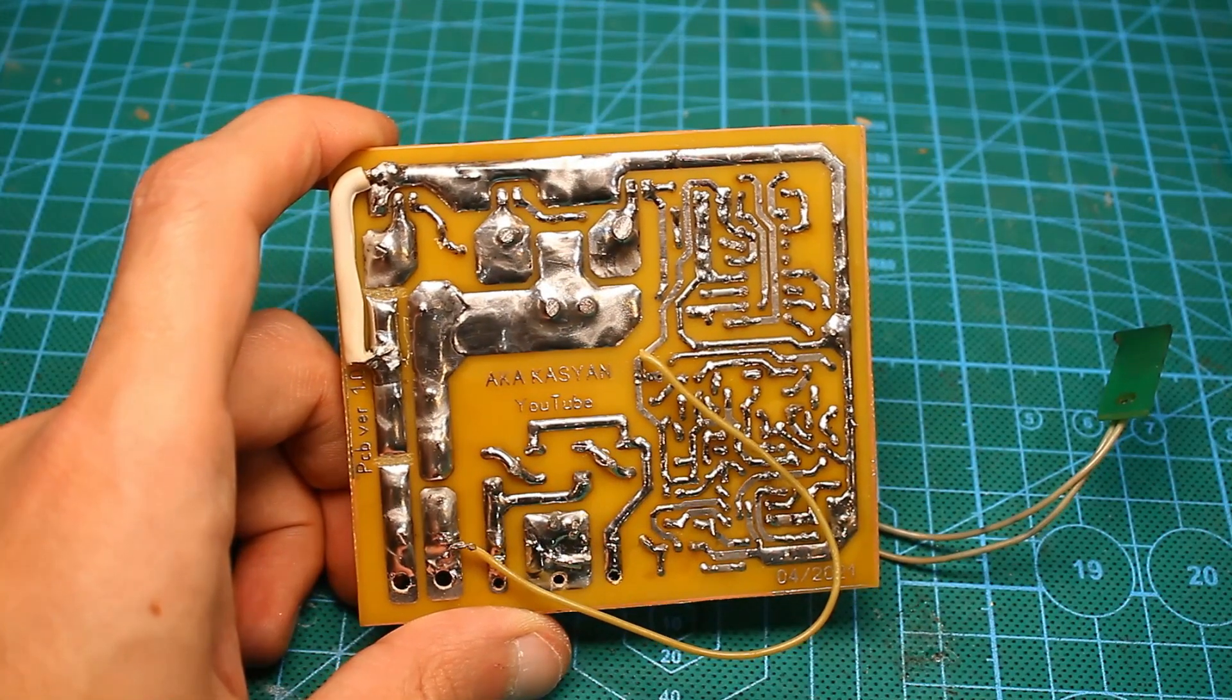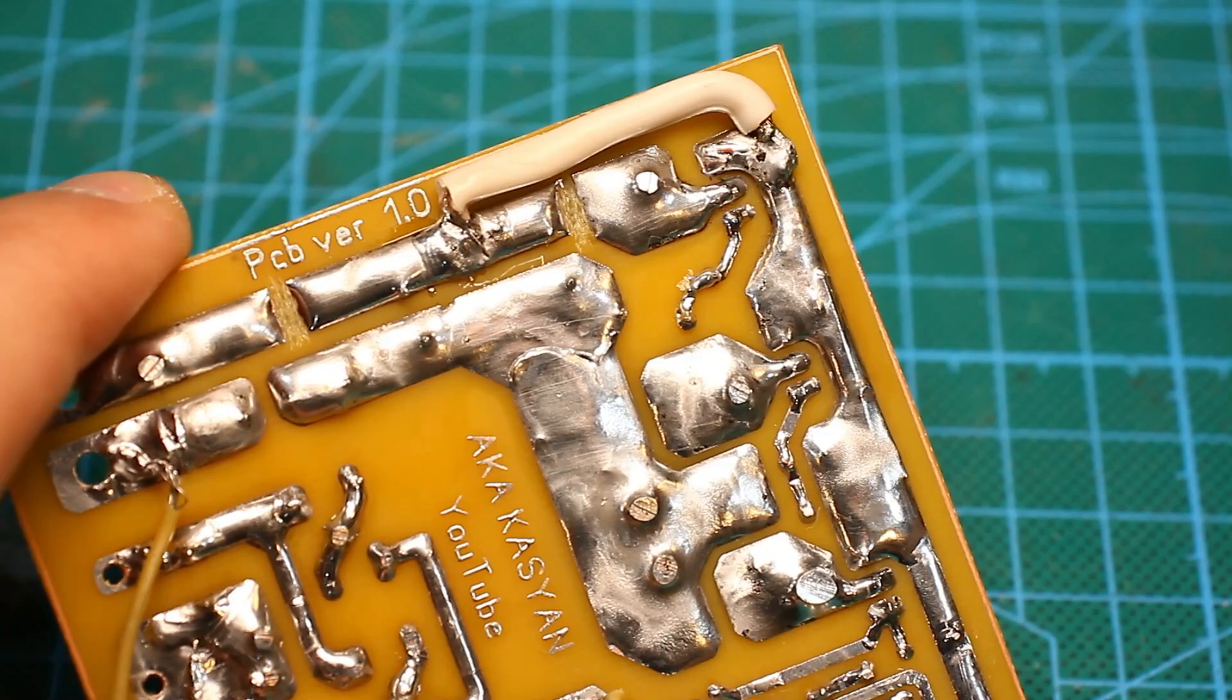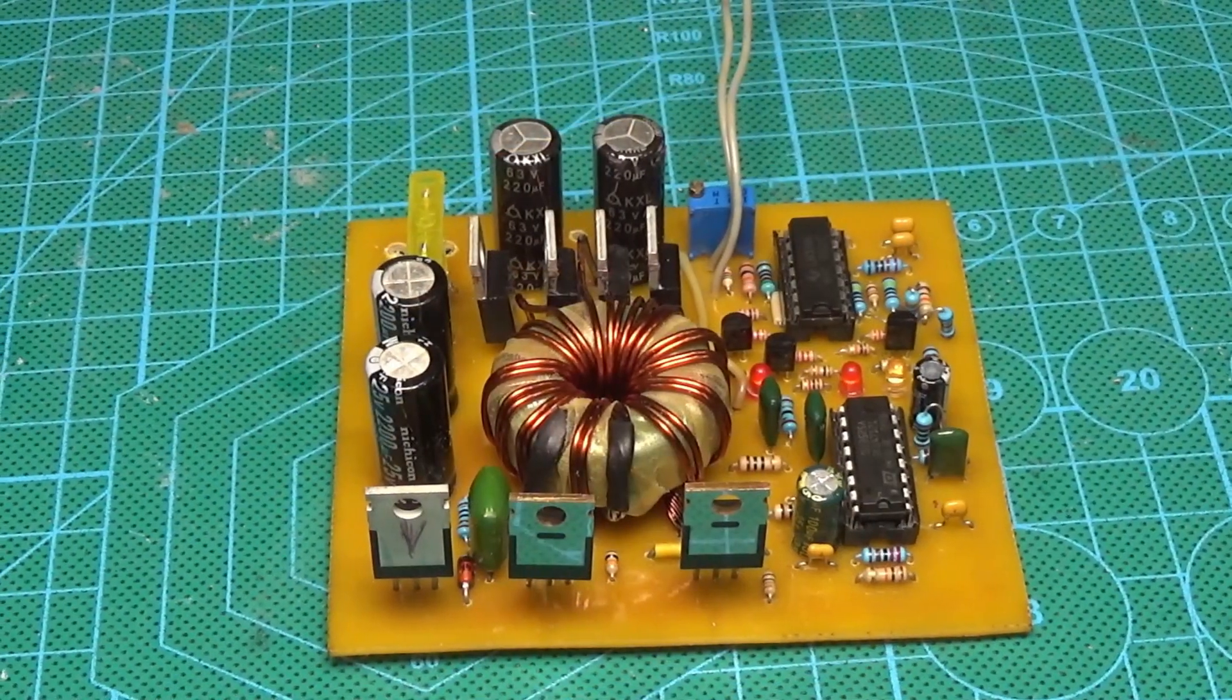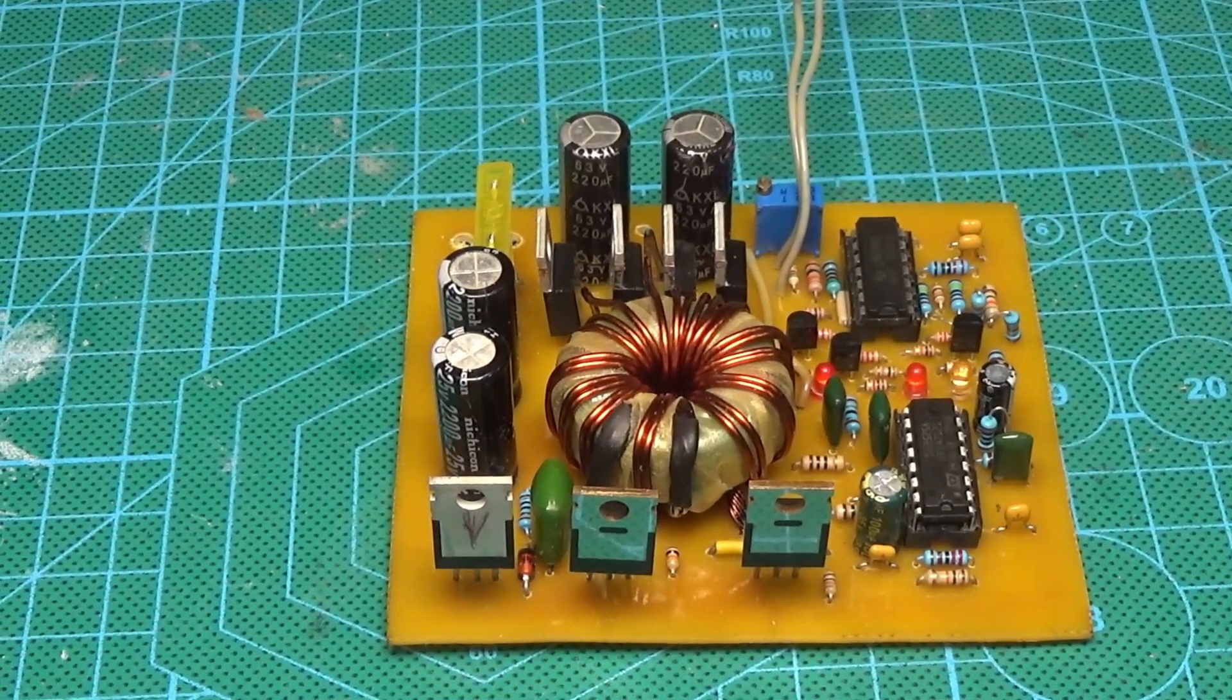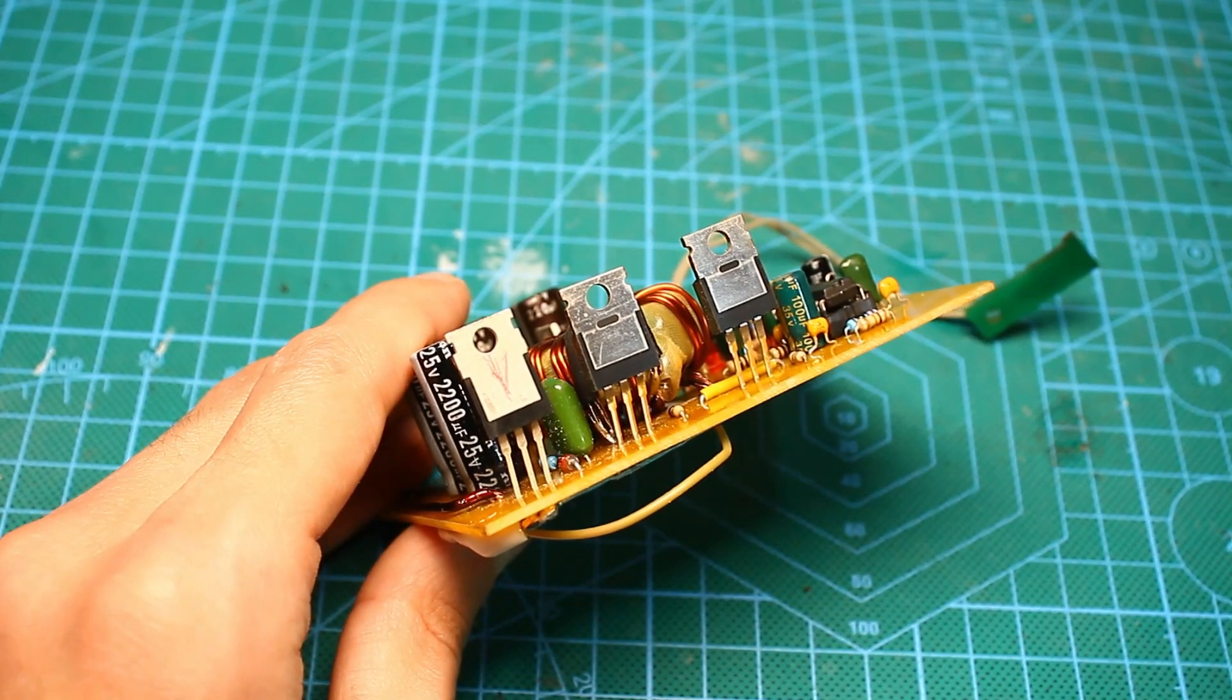All power tracks on the board must be reinforced with copper wires and tinned abundantly with solder. Power transistors are installed on a common radiator and must be insulated from it with thermal gaskets and plastic bushings.